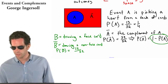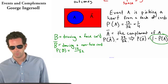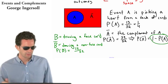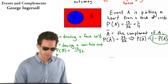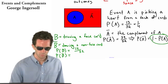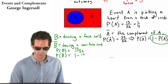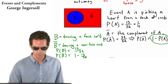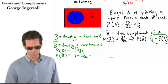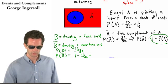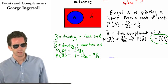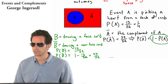We know from this equation here, probability of the complement of A is 1 minus the probability of A, that the probability of the complement of B is going to be equal to 1 minus 12 over 52, which is going to be equal to 40 over 52. And let's just think about that for a second. Let's make sure it makes sense.